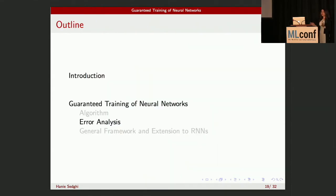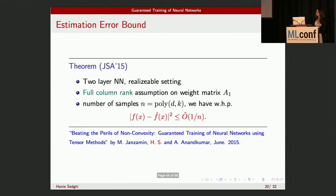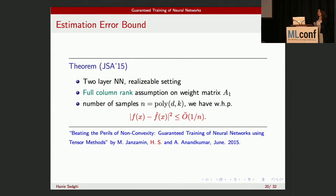Now let me talk about the error analysis. Assuming a two-layer neural network in a realizable setting — the input actually passed through a neural network to generate the label — and assuming the weight matrix for the first layer is full column rank, meaning no neuron is a linear combination of the others, with polynomial samples we can get a squared error bounded by one over the number of samples. The number of samples is a polynomial of D, the dimension of the input, and K, the number of neurons.